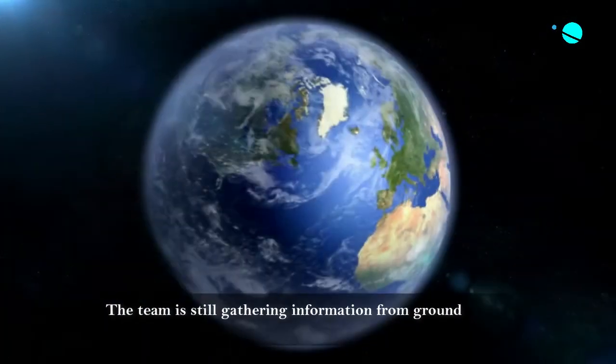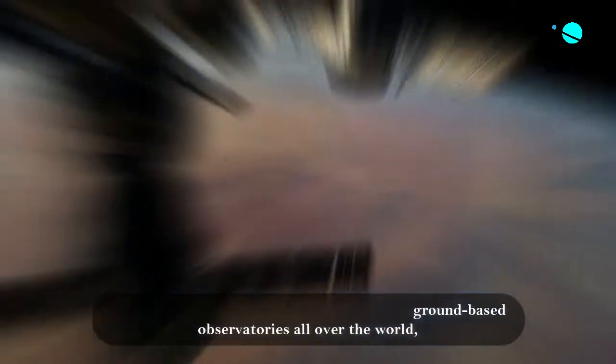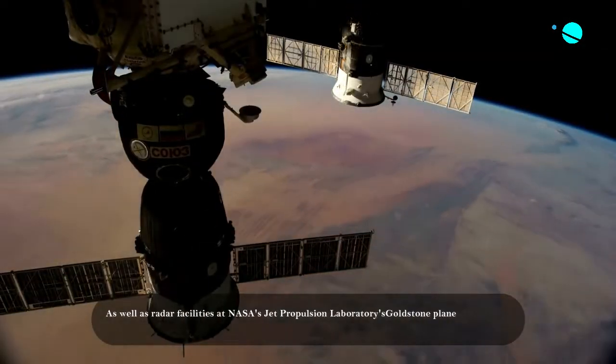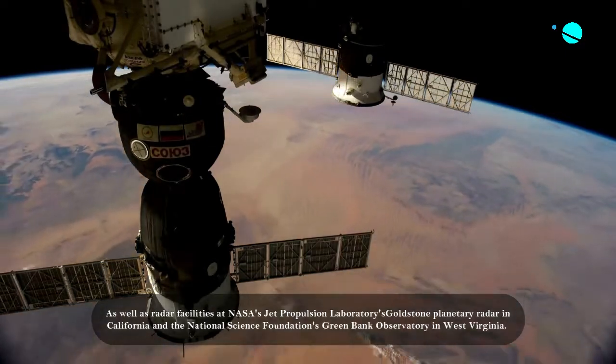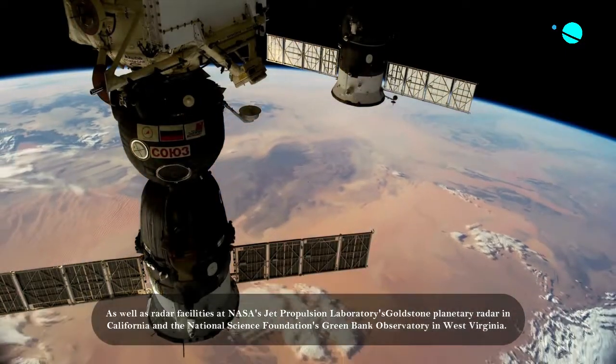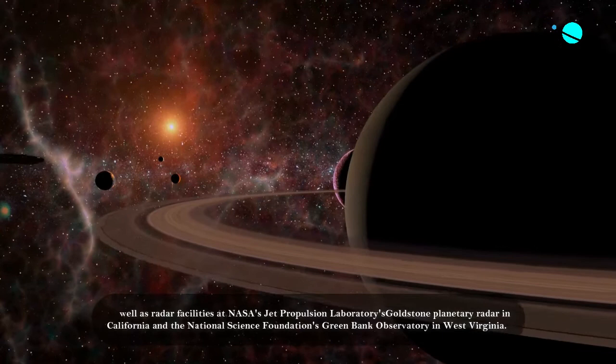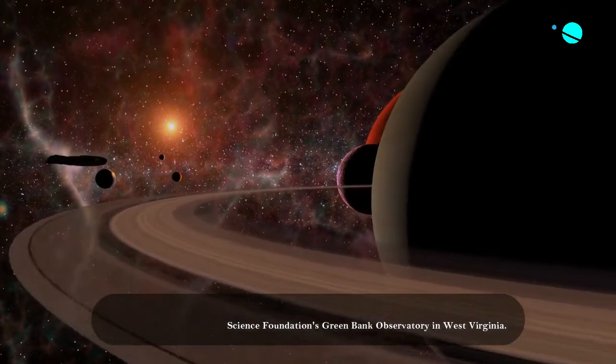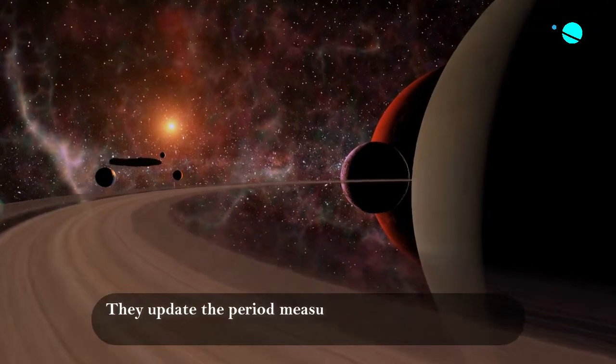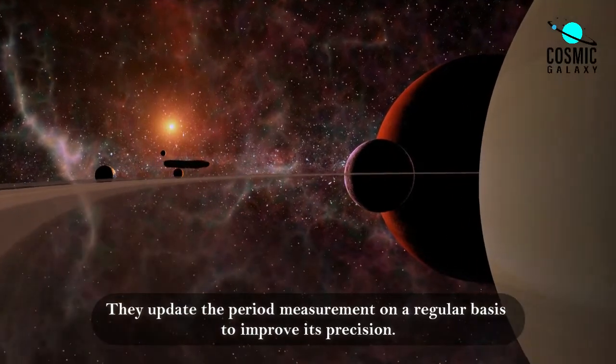The team is still gathering information from ground-based observatories all over the world, as well as radar facilities at NASA's Jet Propulsion Laboratory's Goldstone Planetary Radar in California and the National Science Foundation's Green Bank Observatory in West Virginia. They update the period measurement on a regular basis to improve its precision.